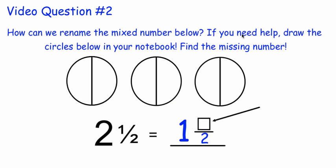Video question two: how can we rename the mixed number below? If you need help, draw these circles in your notebook and find the missing number. Two and one-half — how can we change that so this mixed number is equivalent? Two and one-half equals one and what over two?